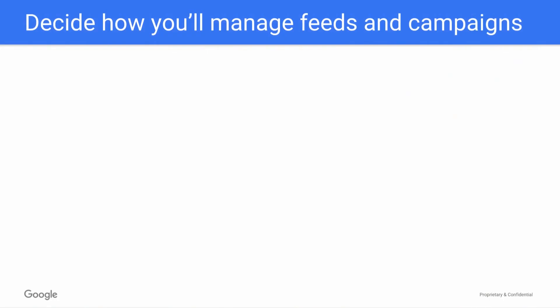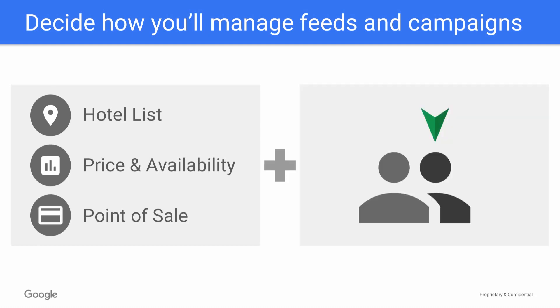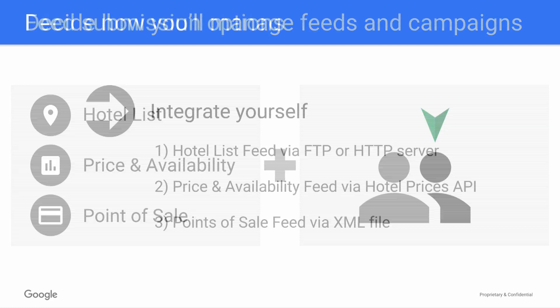This video covers how you can get started using Google Hotel Ads. Google Hotel Ads rely on two key components: a series of data feeds that tell us about the hotel rooms you offer, and the bidding that tells us how much you're willing to pay to get which users to which property booking pages. Since there are a number of working parts, your very first step is deciding how you'll manage these two key pieces. Let's take a look at your options for each.